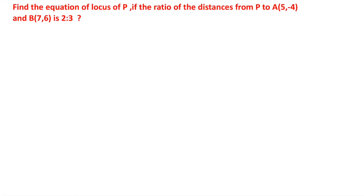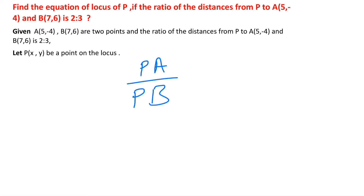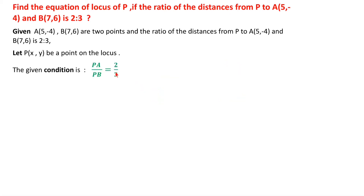Find the equation of the locus of P if the ratio of the distances from P to A(5,-4) and B(7,6) is 2:3. Let P(x, y) be any point on the locus. The ratio PA:PB = 2:3. Cross-multiplying: 3·PA = 2·PB. Squaring on both sides: 9·PA² = 4·PB².